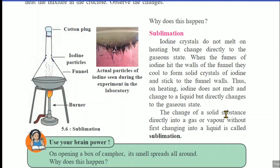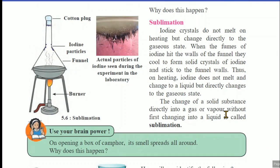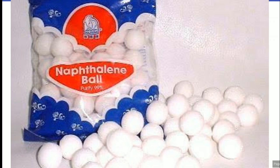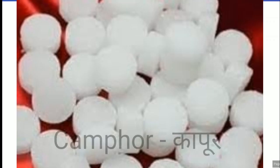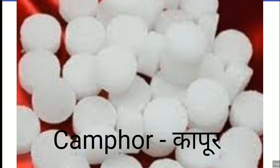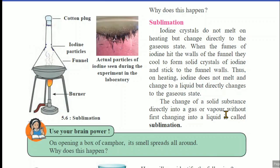The next concept is sublimation. Observe the naphthalene balls or camphor. If you keep camphor or naphthalene balls in a dish at room temperature, after certain days their size decreases. Camphor takes very less time because its size is already small. But naphthalene balls also — as days pass, the size of the naphthalene balls decreases automatically. The process which is the reason for this decrease in size is called sublimation.